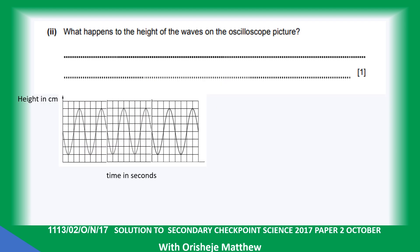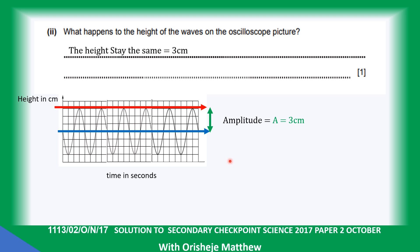What happened to the height of the wave on the oscilloscope picture? The height of the wave remained the same. The height of the wave is what we refer to as the amplitude, and it's three units — the height stays the same, 3 cm. The amplitude of a wave affects the loudness: a loud sound has high amplitude, while a soft sound has low amplitude.